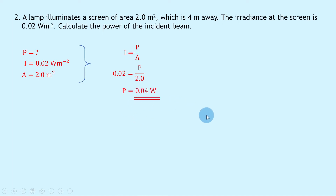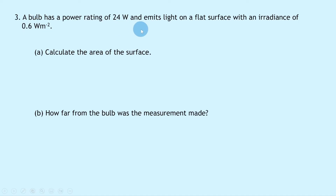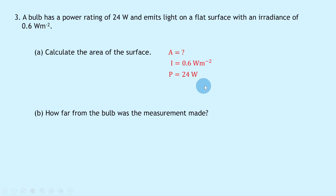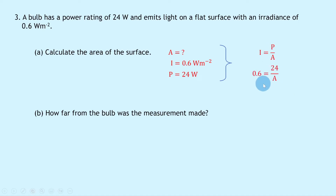Question three says a bulb has a power rating of 24 watts and emits light on a flat surface with an irradiance of 0.6 watts per square meter. Part a says to calculate the area of the surface. We're trying to find area A; irradiance I is 0.6 watts per square meter and power P is 24 watts. Using I equals P over A, substituting gives 0.6 equals 24 divided by A. Multiplying both sides by A gives 0.6A equals 24, then dividing both sides by 0.6 gives A equals 40 meters squared.